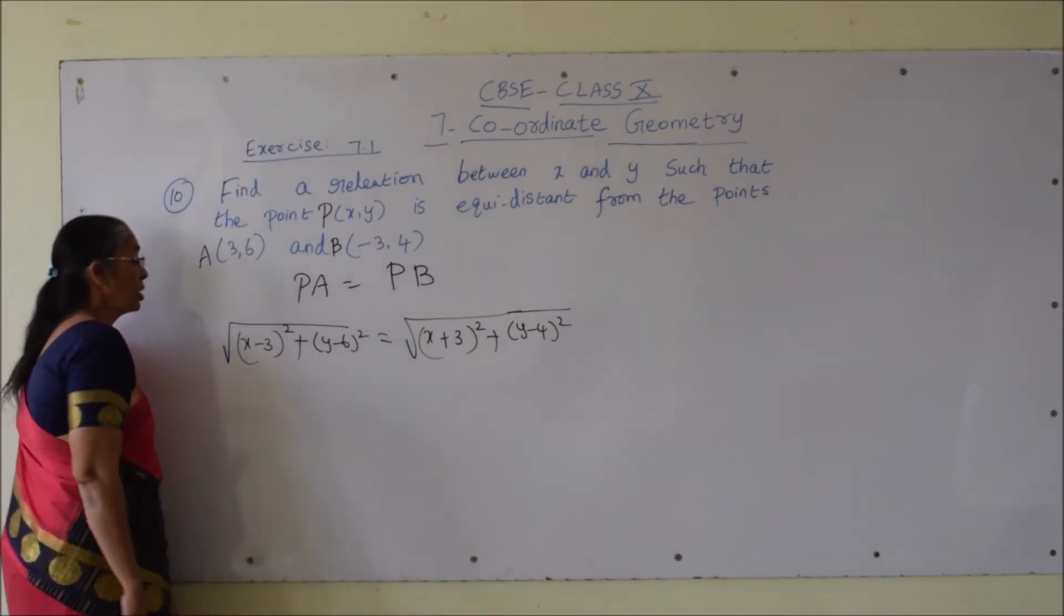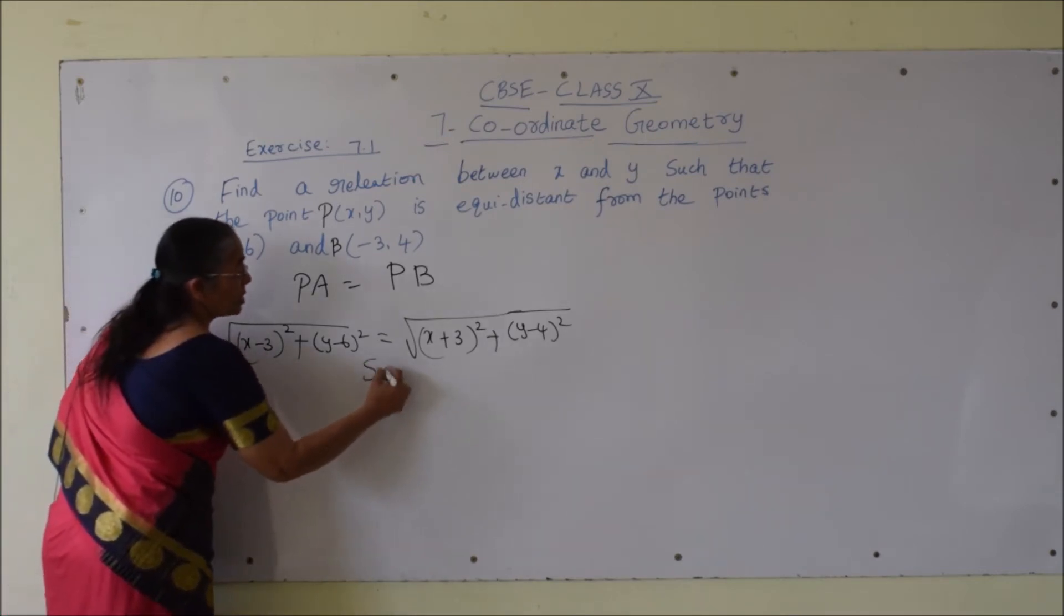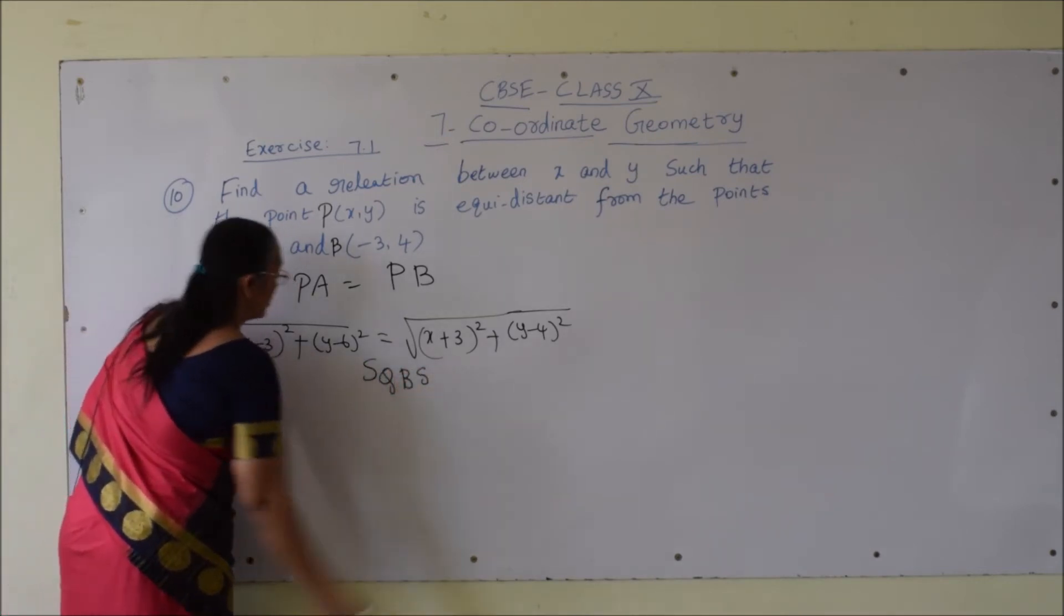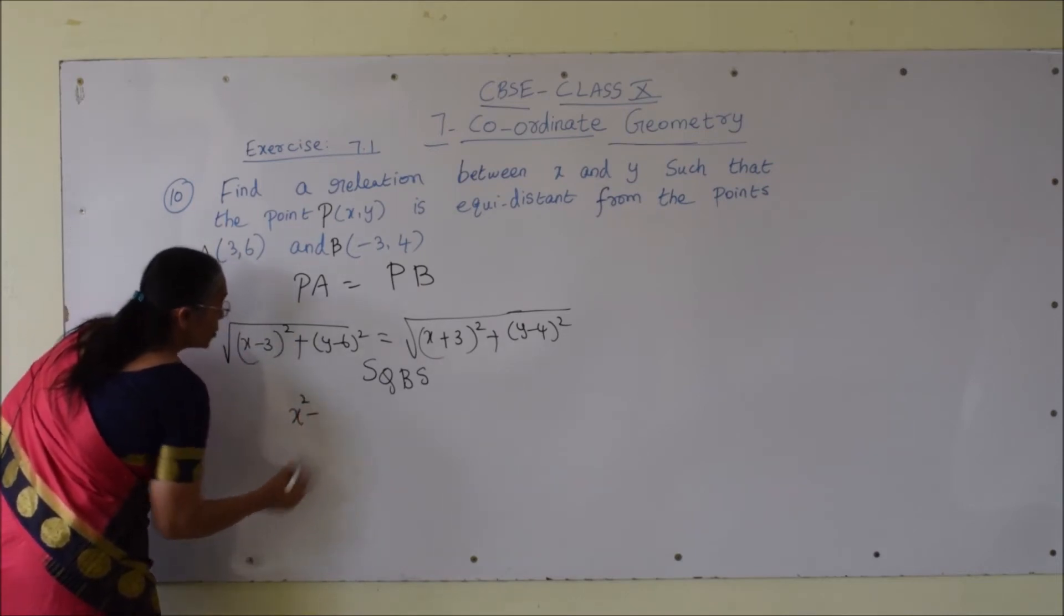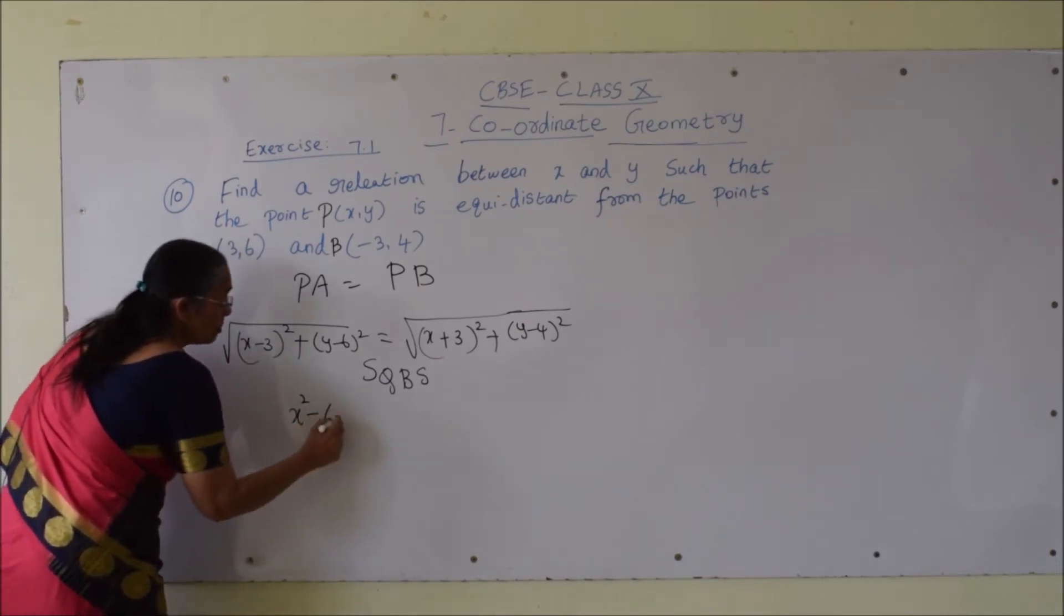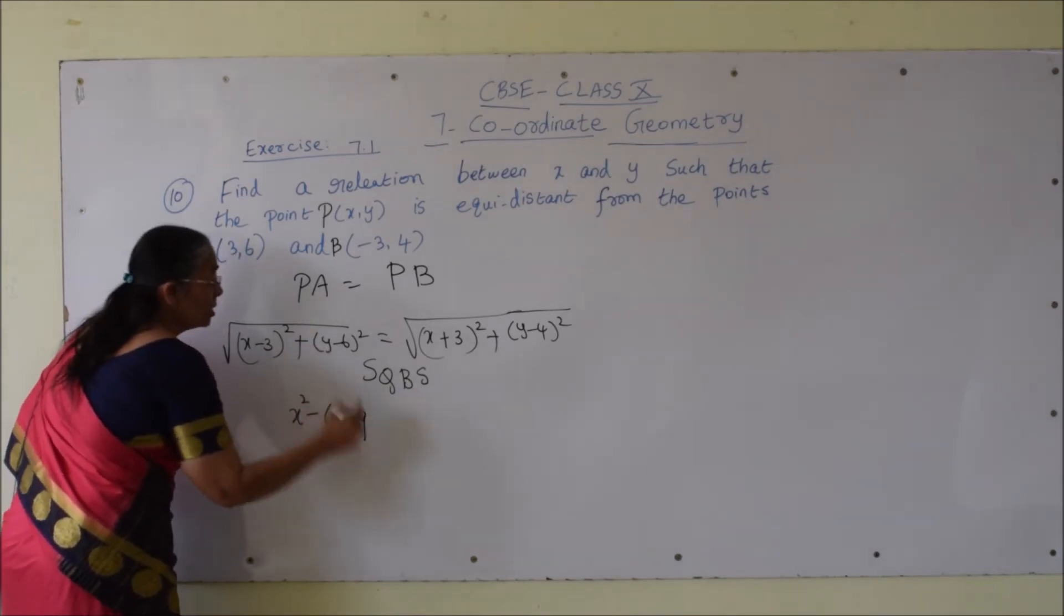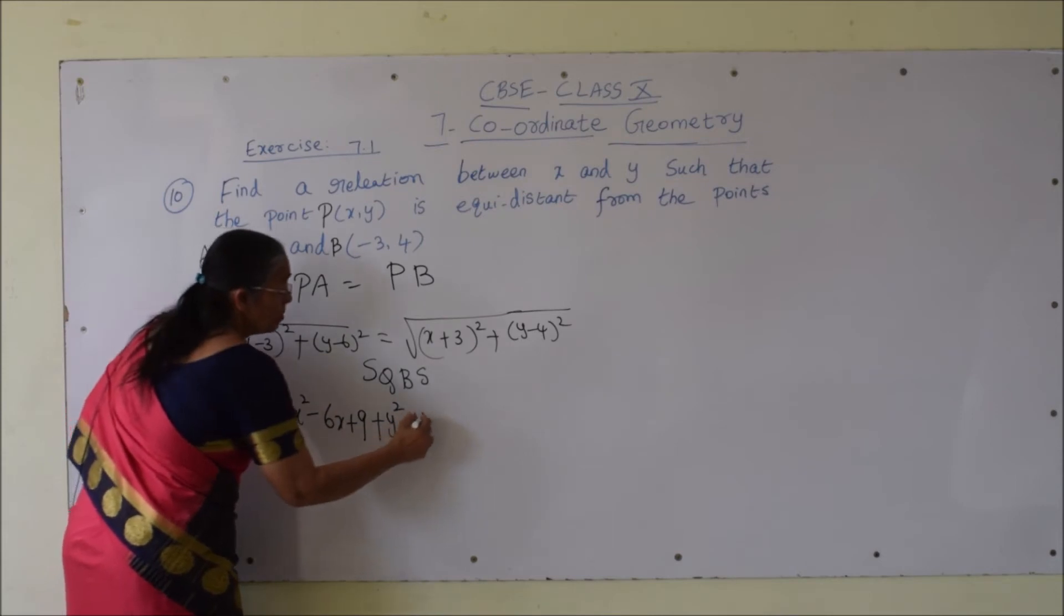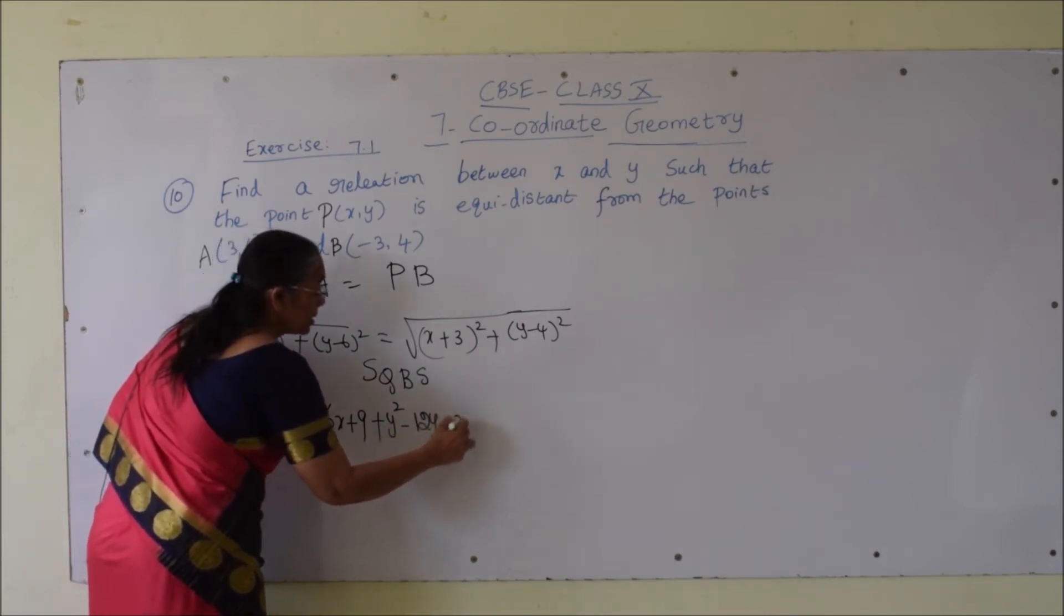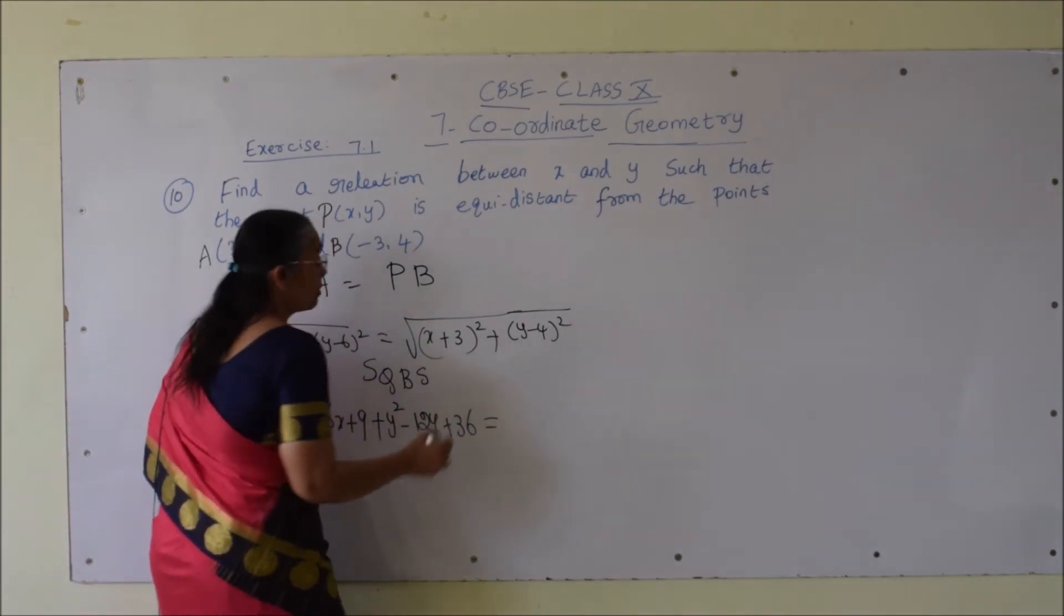Just simplification now. Squaring on both sides, so root will go off. (x minus 3) whole square, using (a minus b) whole square formula: x square minus 6x plus 9, plus again (a minus b) whole square formula: y square minus 12y plus 36 is equal to